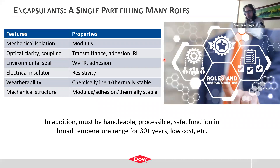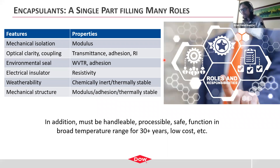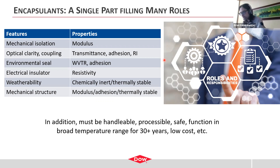In addition to these critical roles, the encapsulant needs to be handleable — we need to be able to turn it into the part we want. It needs to be processable so we can form it into a film and lay it up in a module assembly process. Of course, it needs to be safe, functional in a broad temperature range for 30 years, and we don't want to pay much for it if we don't have to.